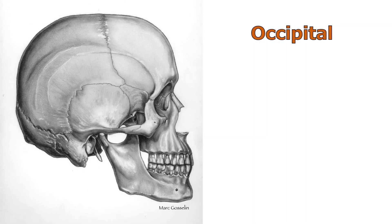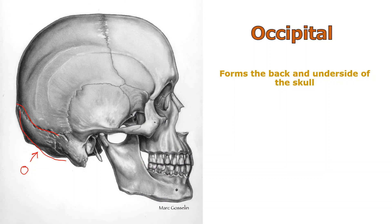So the occipital bone is the bone here at the back of the skull, and it creeps along here and disappears behind some of the structures of the temporal bone. Not only does it form the back of the skull, but it forms pretty much most of the base of the skull, the very underside of it. We're going to check out the occipital bone from several different aspects so we can get a clear picture of what it looks like.